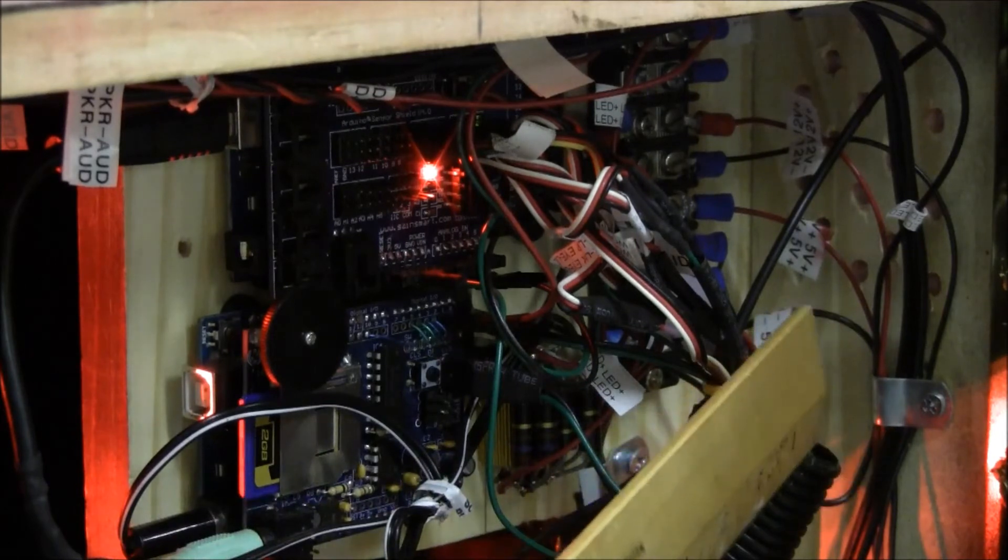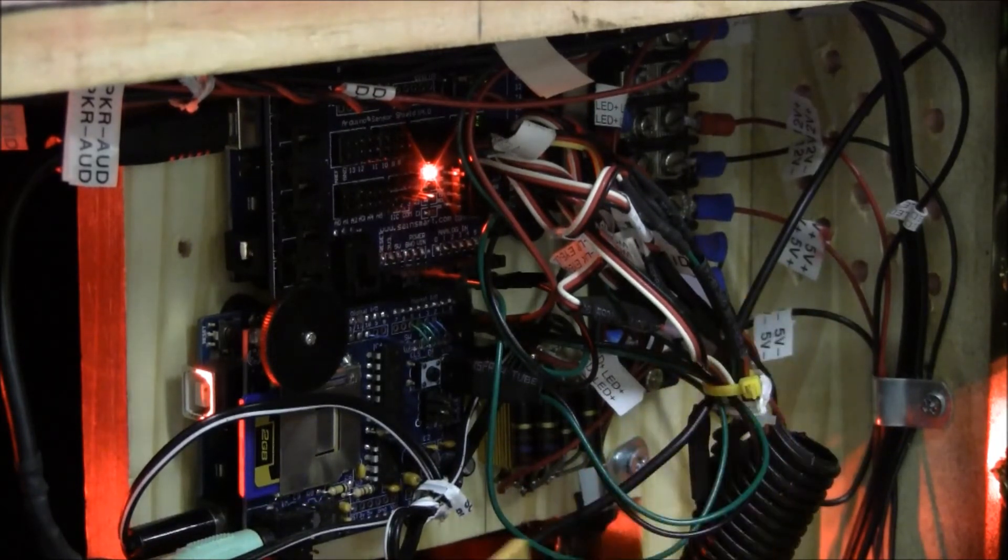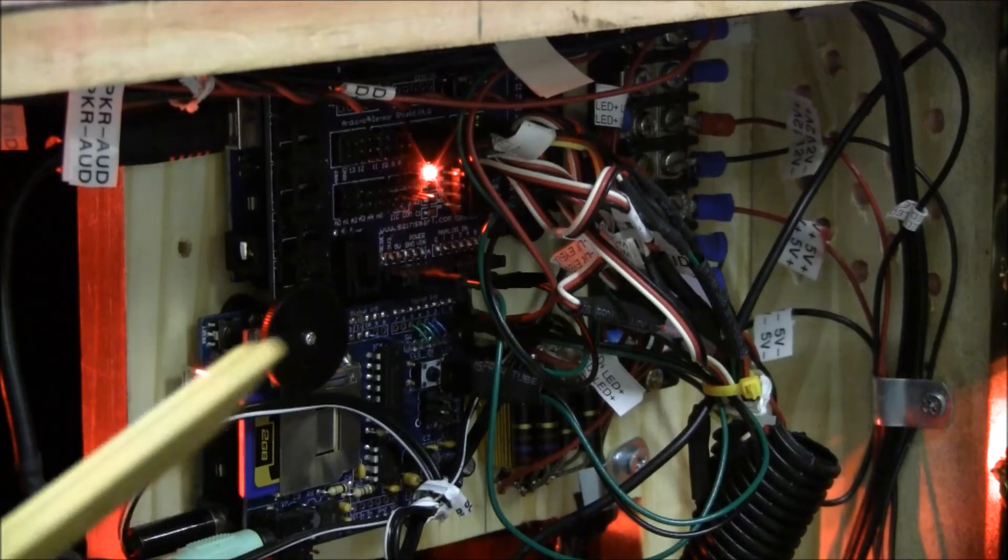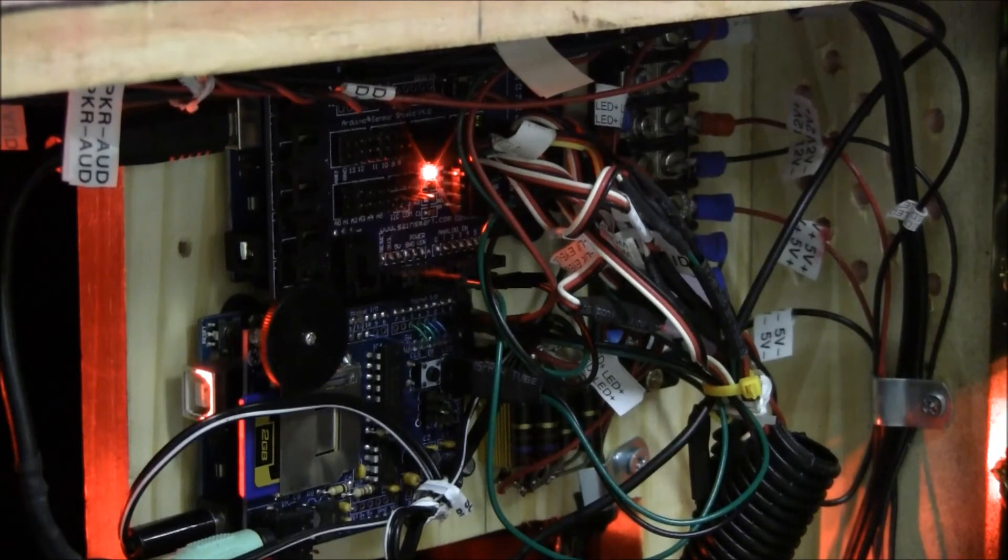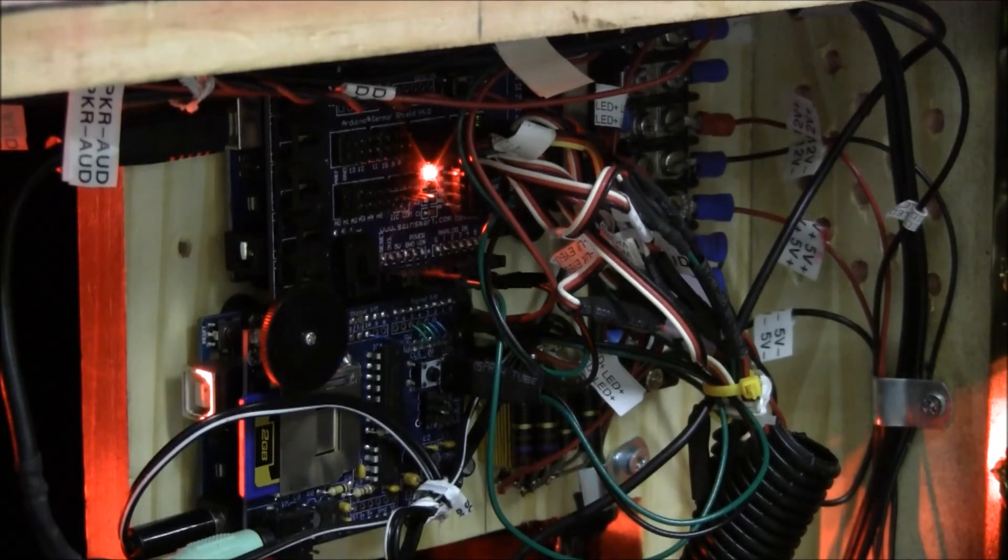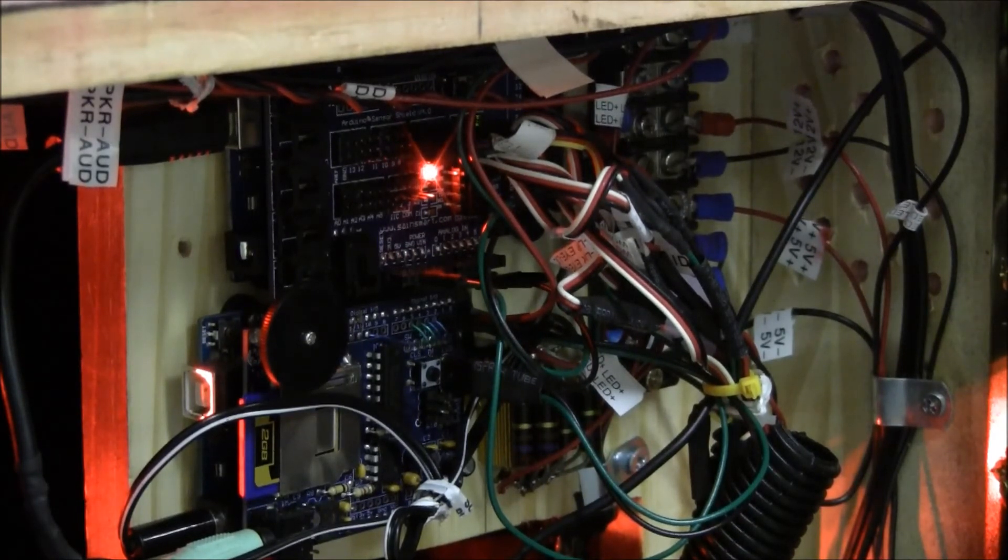Back here is our power distribution. That takes the voltage of 12 volts and 5 volts from the power supply and feeds it to our micros and servos. All the wires are nicely labeled and the AC input is shielded from the user.